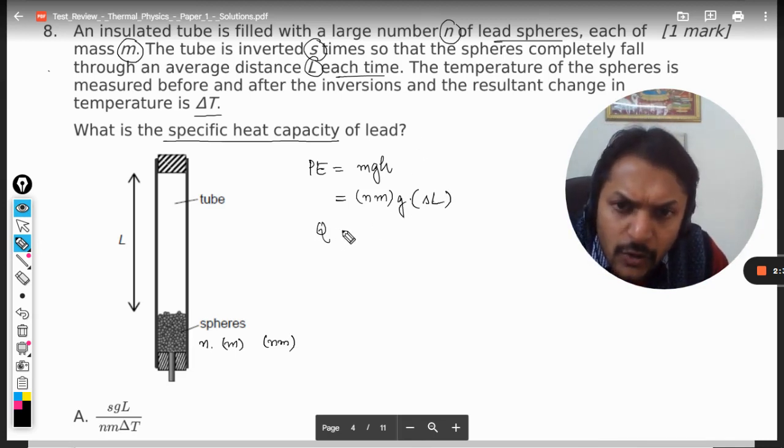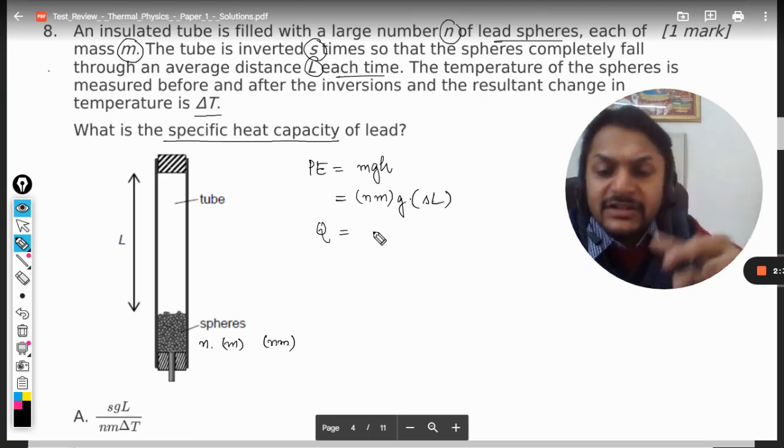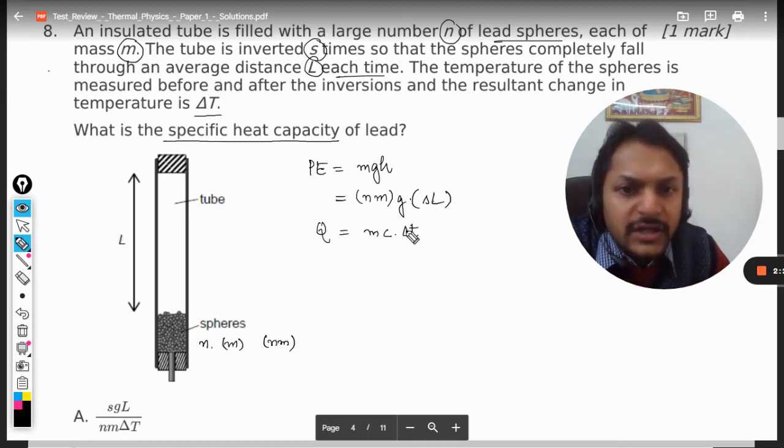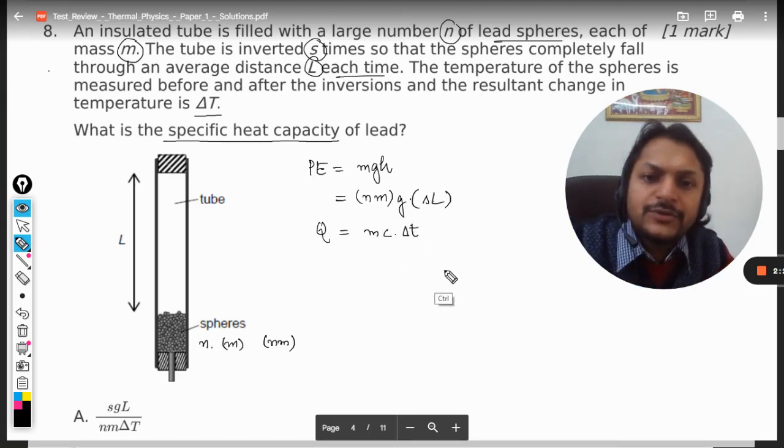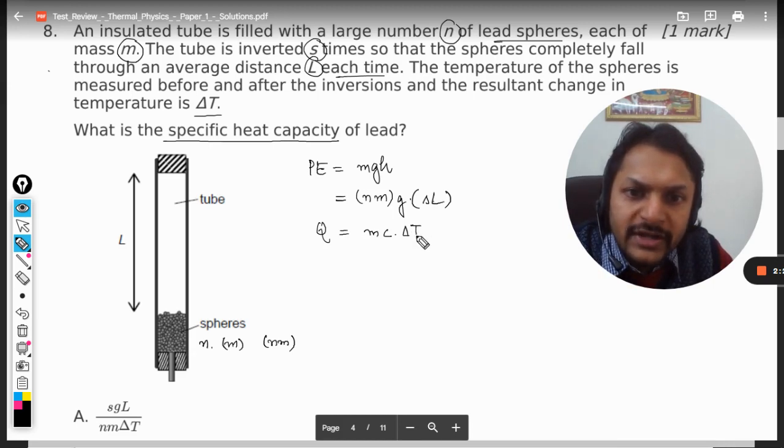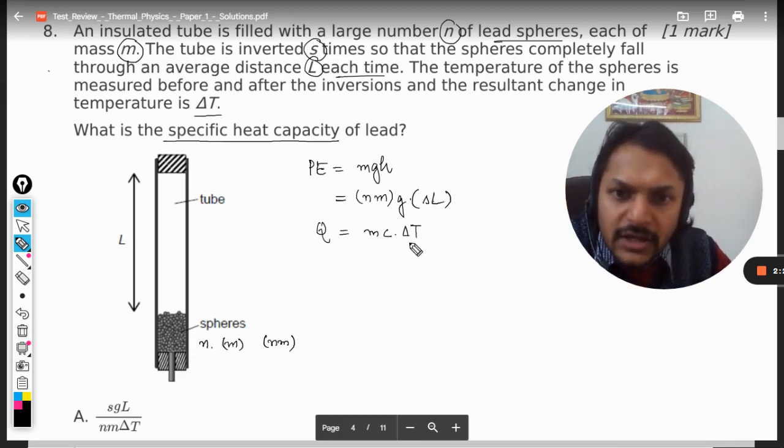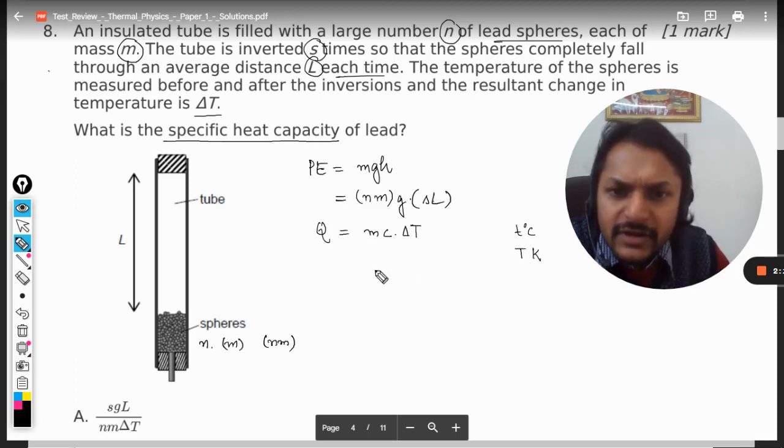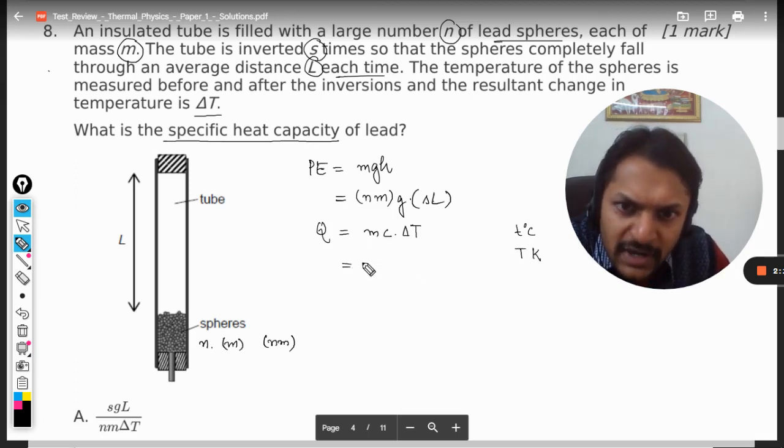Now what is the formula for the heat that was absorbed? That is mc delta t. Delta t can be taken in Kelvin or in absolute terms also. You can write capital T or small t - when we write small t generally it is degree Celsius, and when we write capital T generally it is Kelvin. So now what is the mass? Mass will be n into m, c into delta t.